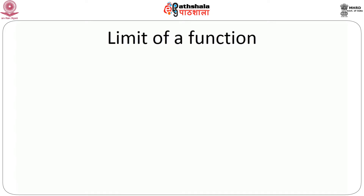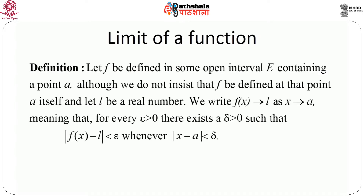First, limit of a function — what is the meaning of it? The definition goes by this. Suppose we have a function of a real variable, a single variable x, that is the function is f(x) and it is defined in some open interval E containing a point a. Now, remember, we are not going to insist that f will be defined at that particular point a itself. Assume that l be a real number; we write f(x) goes to l as x goes to a, which means that for every epsilon greater than 0, epsilon might be arbitrarily small, there always exists a delta, which is again small but positive, such that |f(x) − l| < epsilon whenever |x − a| < delta.